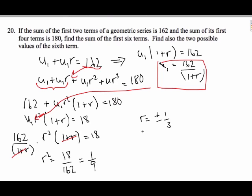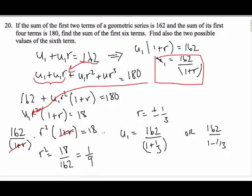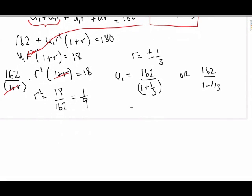So, we have two values for R. We have to go now and find my U1. I can use this scenario here. U1 equals 162 over 1 plus 1 third, or I can say 162 over 1 minus 1 third. Do little calculations here. This is 162 over 4 thirds, which is 162 times 3 quarters, which is 162 divided by 4 times 3 is equal to 121.5.